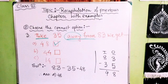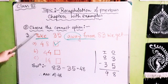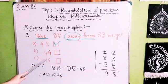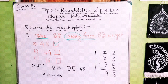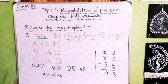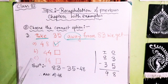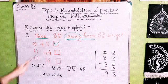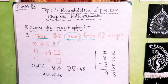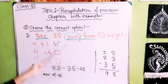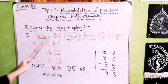Our third question: Take 35 away from 83 — we get Option A: 48, Option B: 44, Option C: 14. The keyword here is 'take away,' which indicates subtraction. We subtract the smallest number from the biggest number. Between 35 and 83, the greatest number is 83, so we subtract 35 from 83.